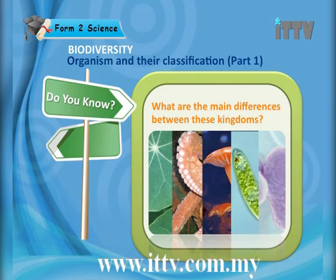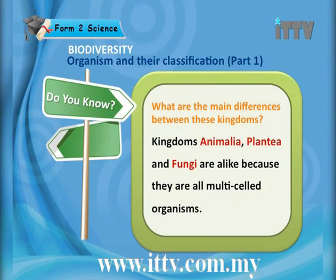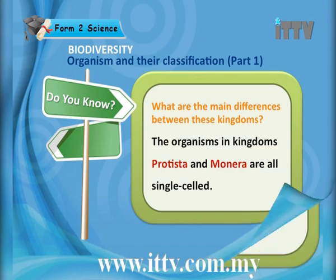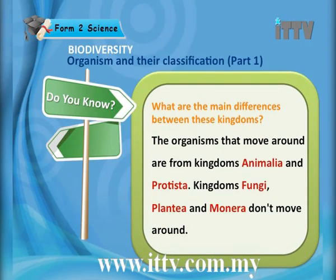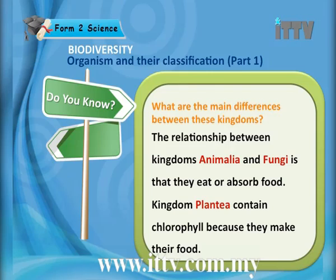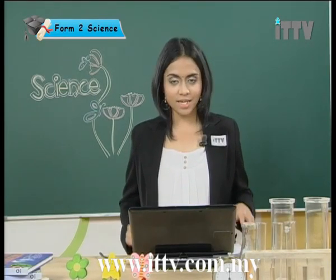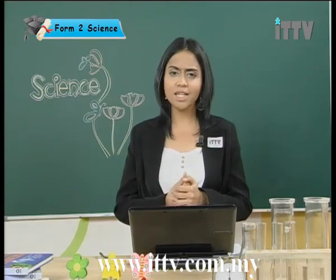What are the main differences between the kingdoms? Kingdoms Animalia, Plantae and Fungi are alike because they are all multi-celled organisms. The organisms in kingdoms Protista and Monera are all single-celled. Organisms that move around are from kingdoms Animalia and Protista; kingdoms Fungi, Plantae and Monera don't move around. Animalia and Fungi eat or absorb food, while Plantae contains chlorophyll to make its own food. Monera and Protista fall into both categories.